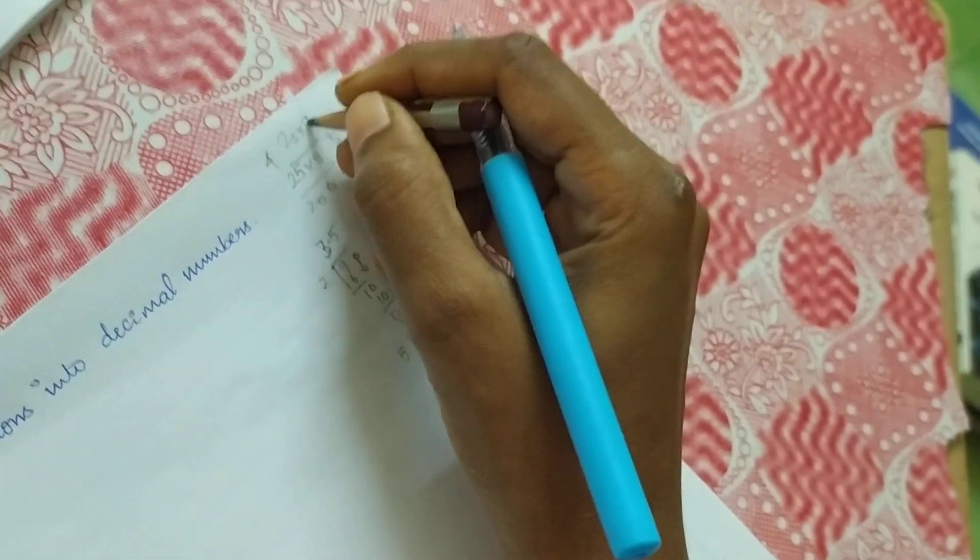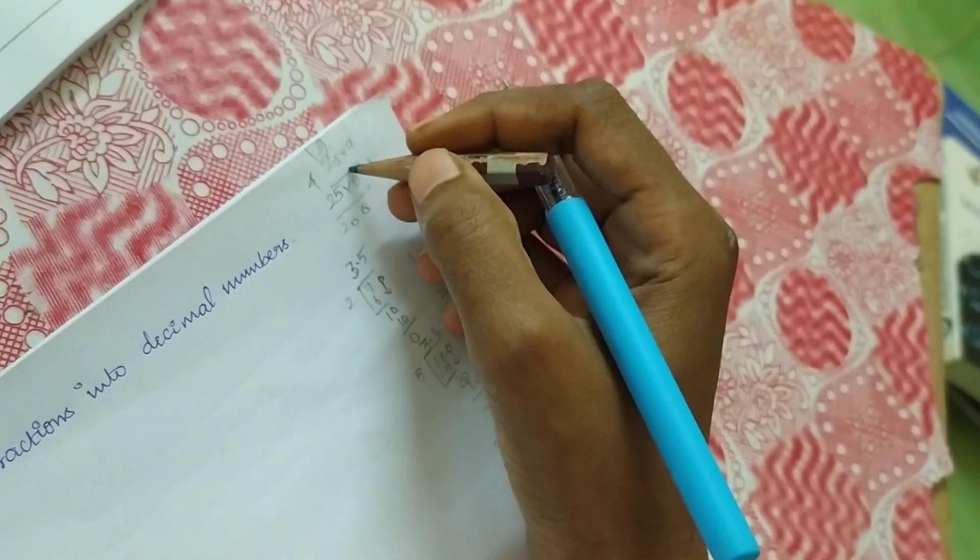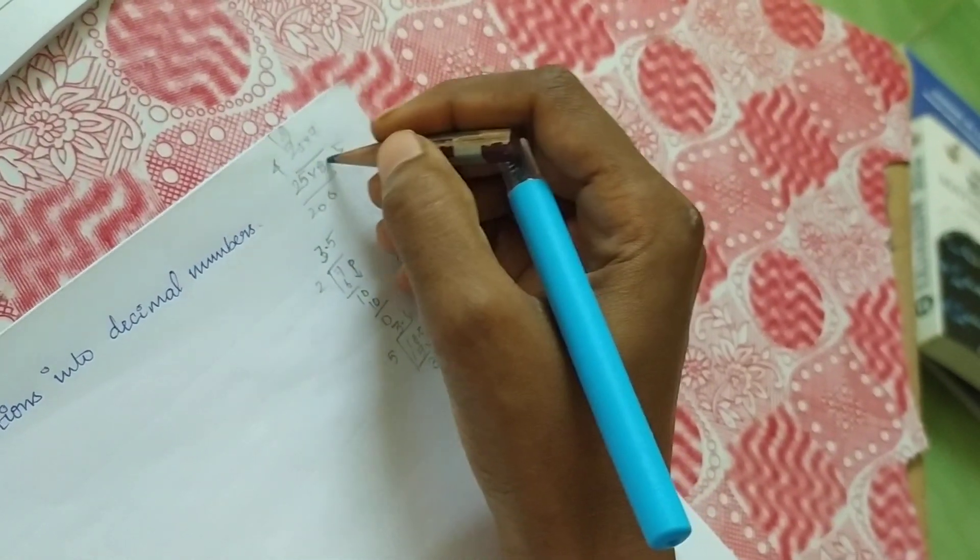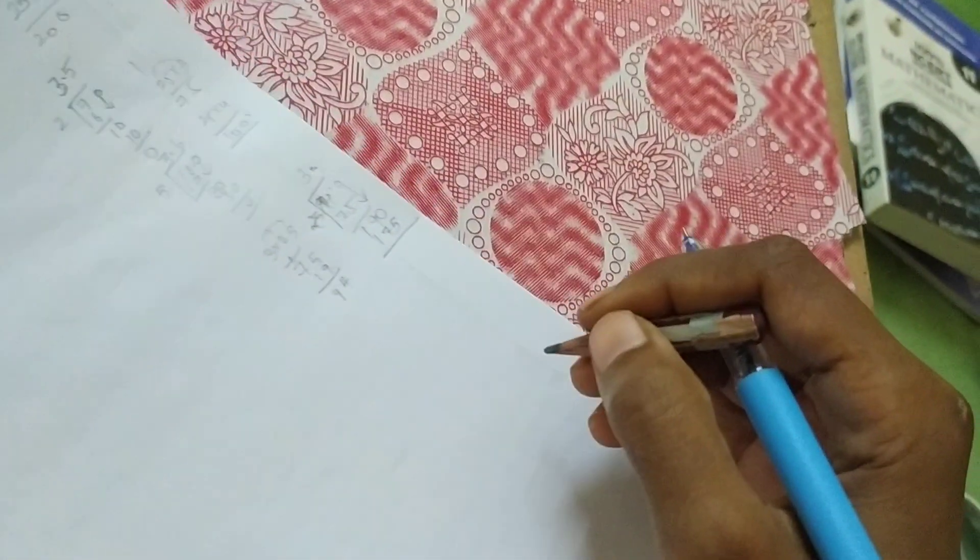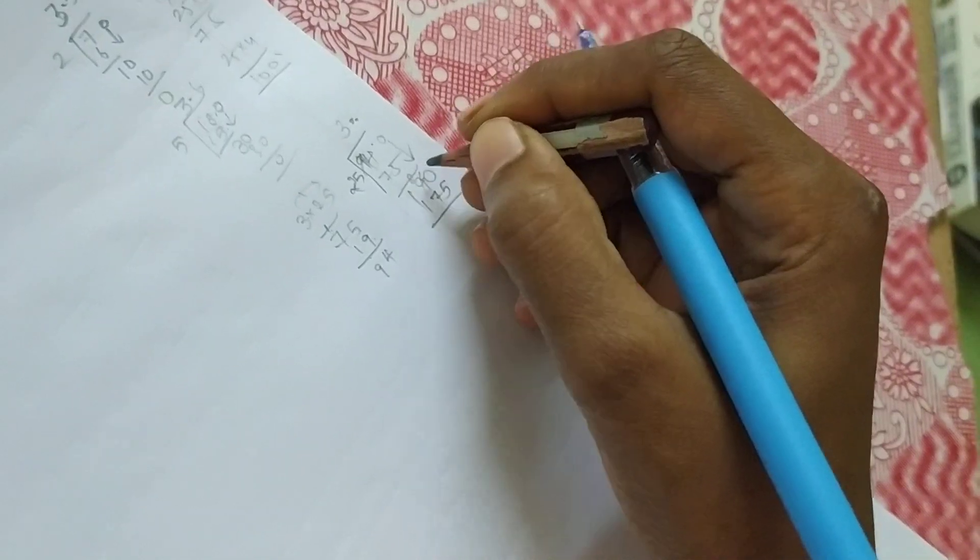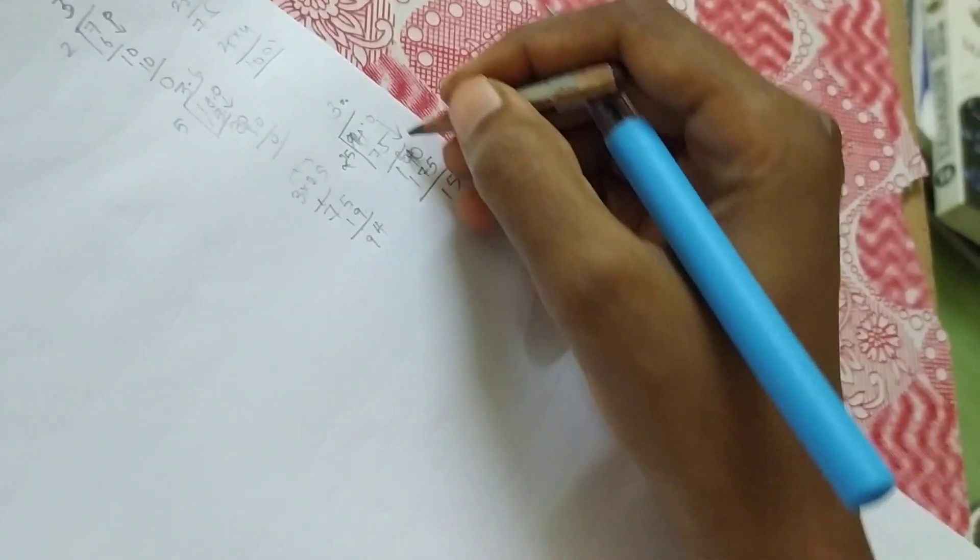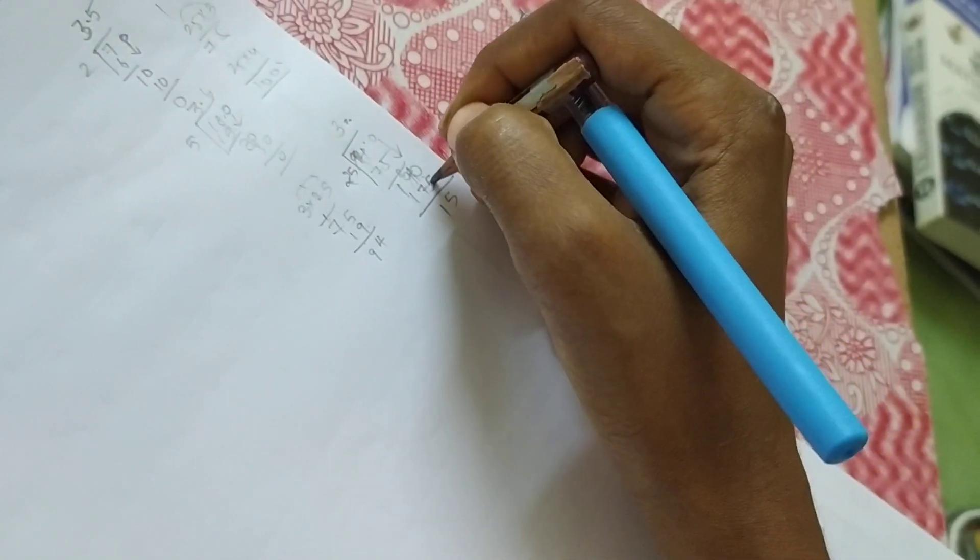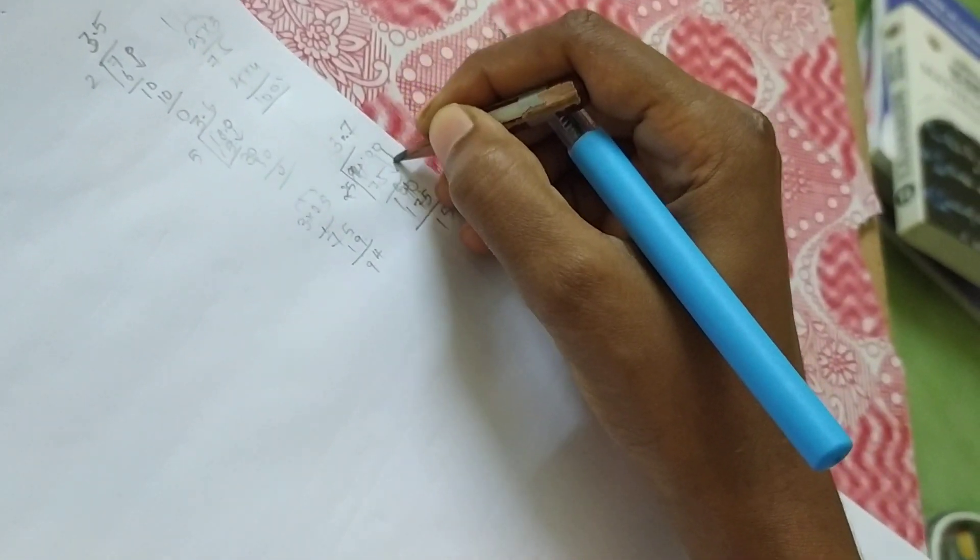So 175. Borrow from here: 18 minus 1, so 15. How many times? After putting the point, it's 0, so 150 is there.